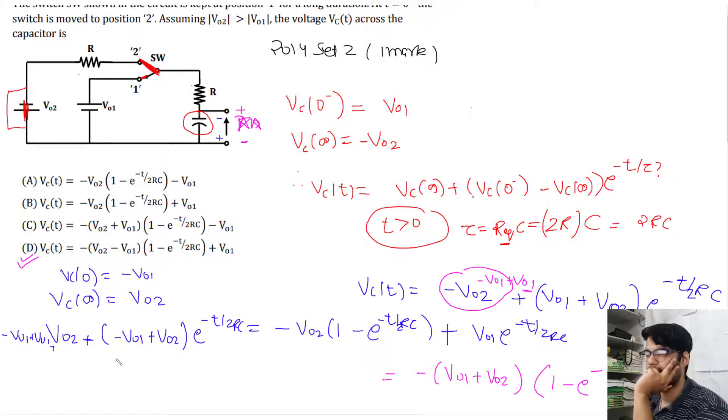And Vc(∞) would be V02 directly. If I add minus V01 plus V01, then this minus V01 and plus V01 go together. Taking out common gives minus (V02 minus V01) times e to the power minus t upon 2RC, plus V01.